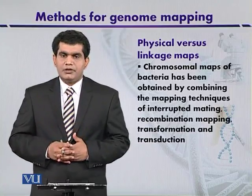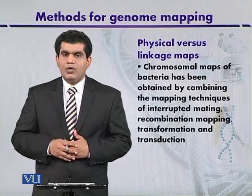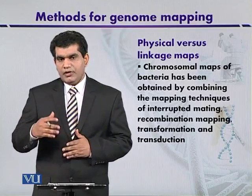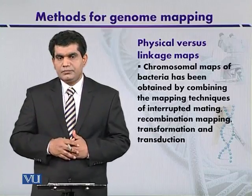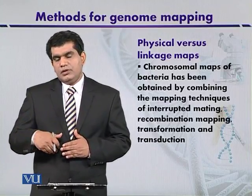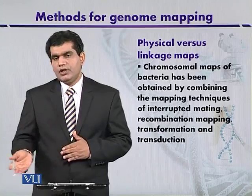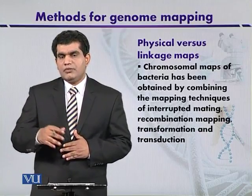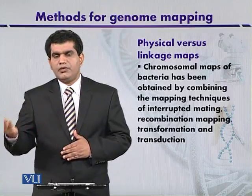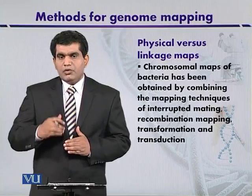Taking the example of simple microbes like E. coli or bacteria, a number of maps have been obtained using different techniques — such as interrupted mating, recombination mapping, the process of transformation where microbes can take naked DNA from the environment, and transduction, where vectors like bacteriophages transfer DNA from one host to another.